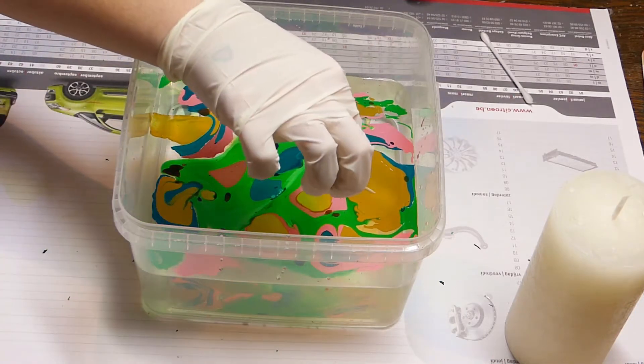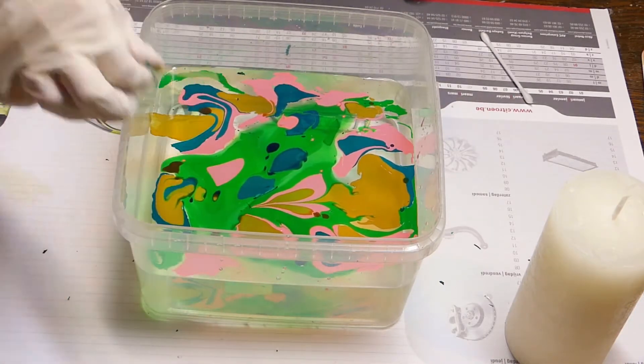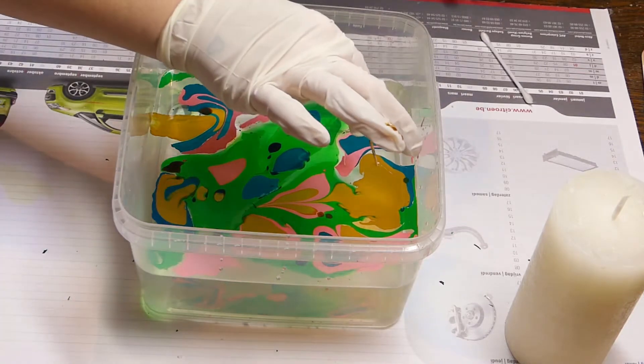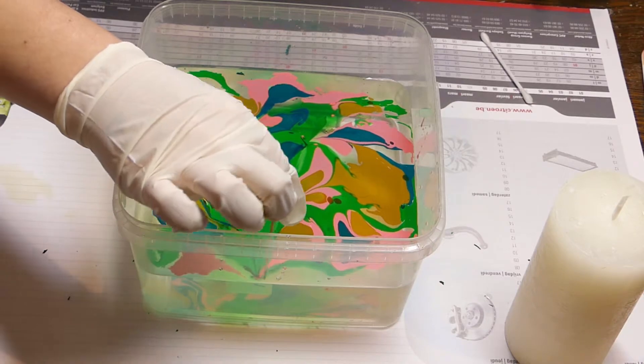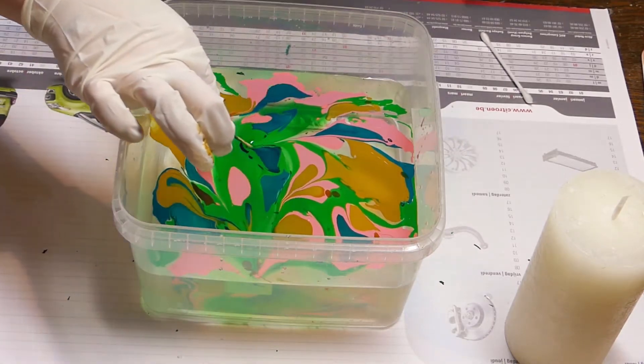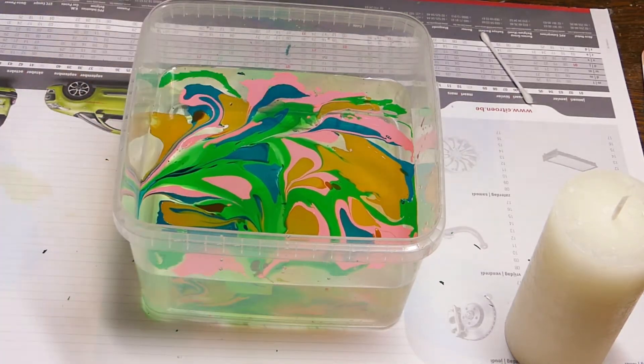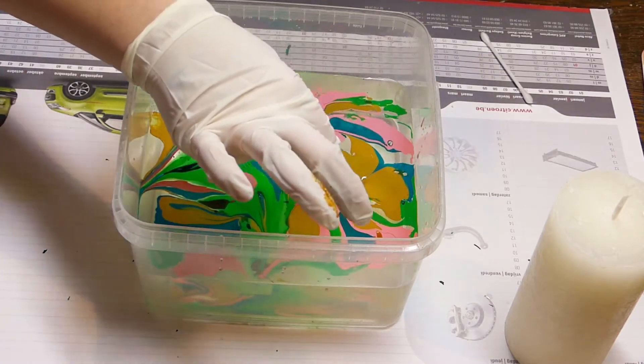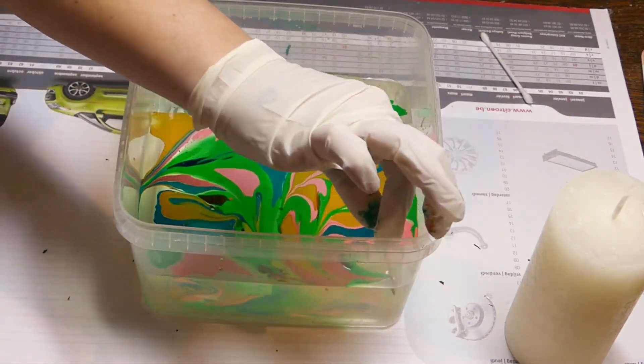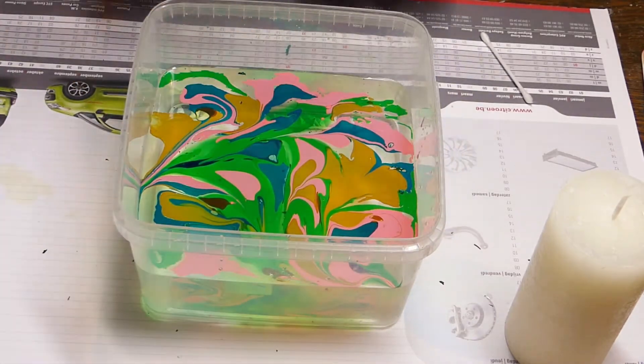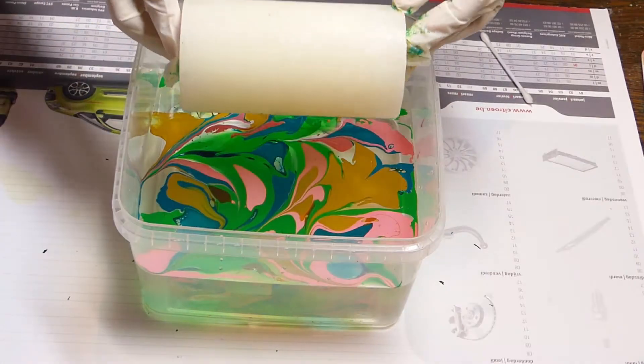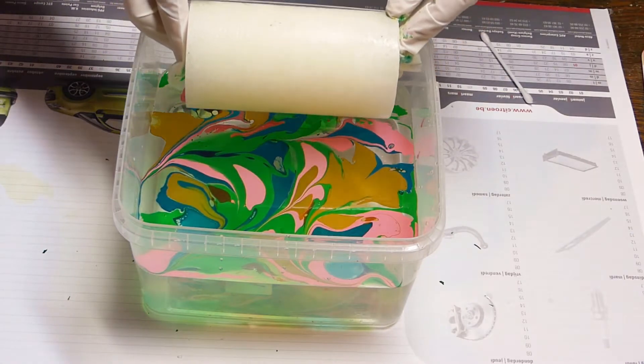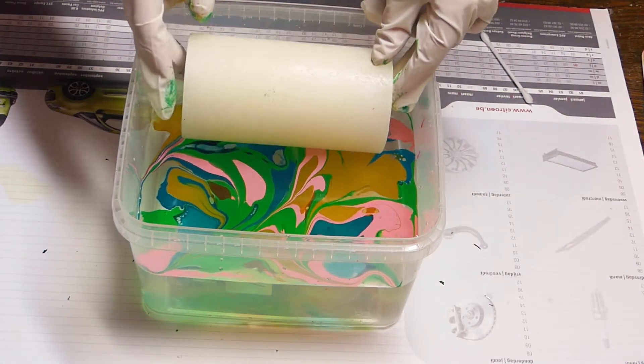Carefully drag the toothpick through your colors until you get the marble effect you would like to see on your candle. Grab your candle and slowly roll it through the paint.